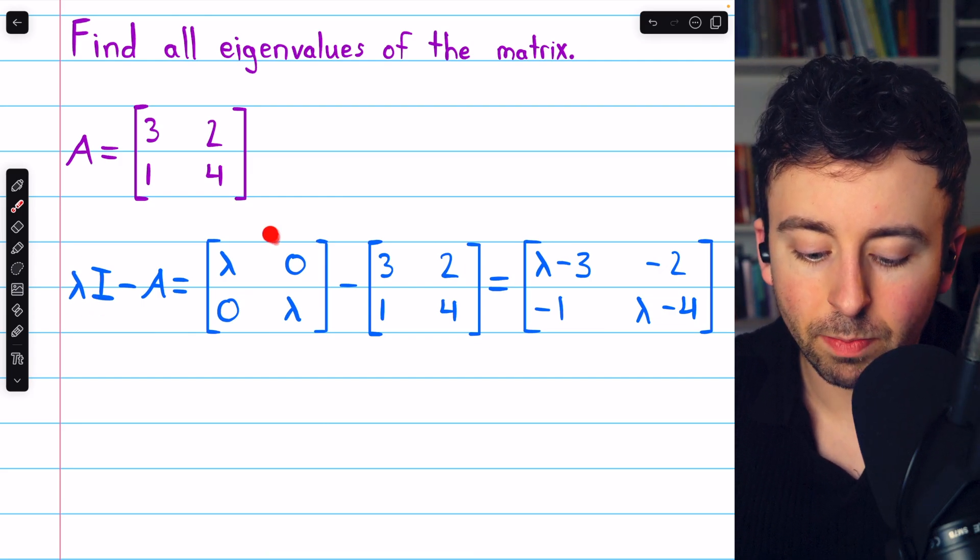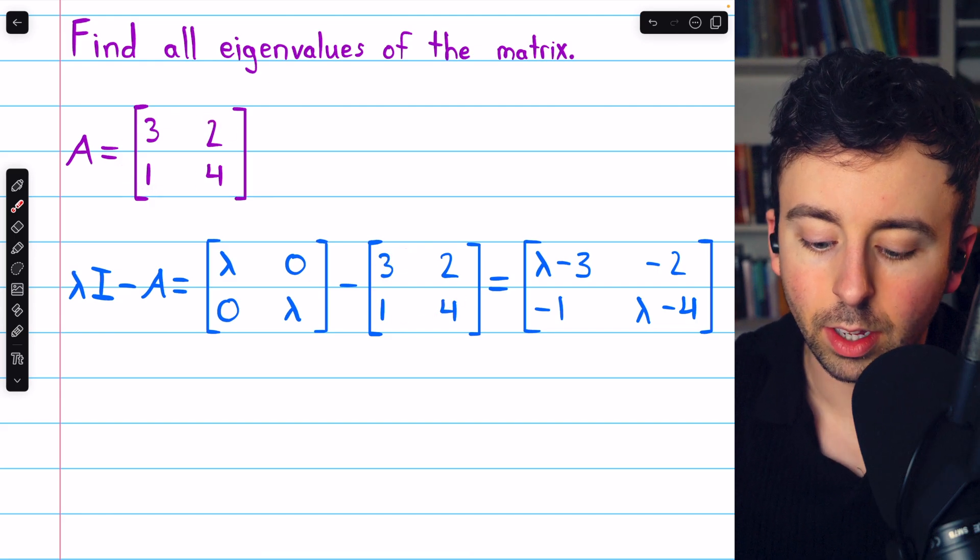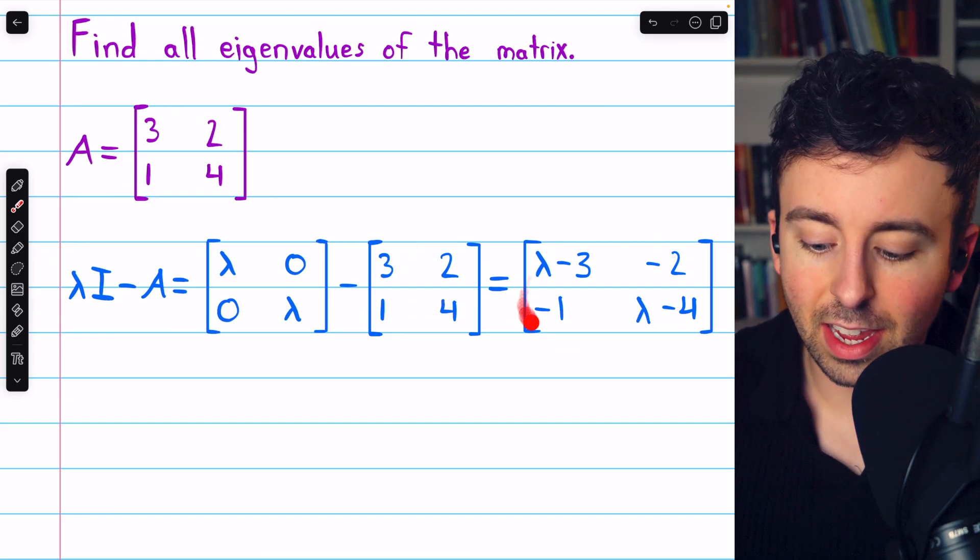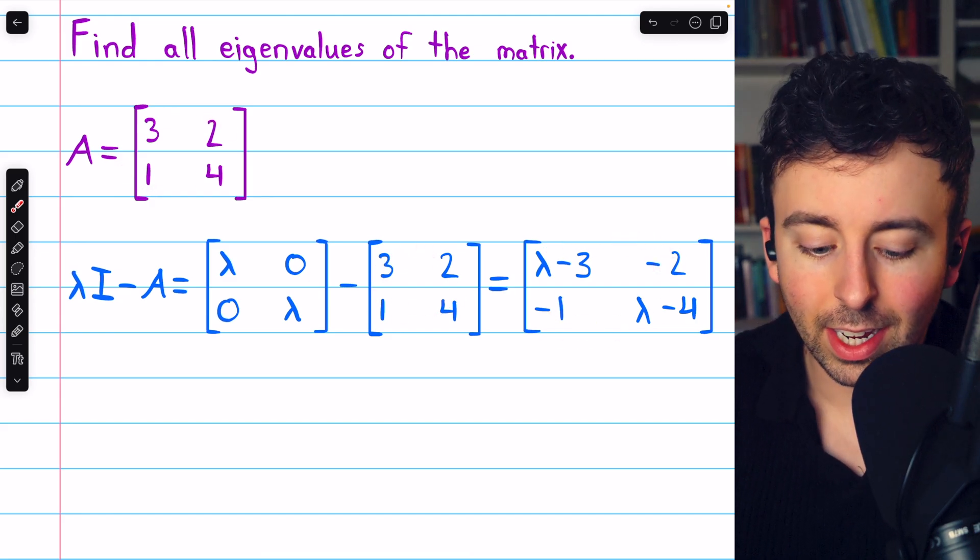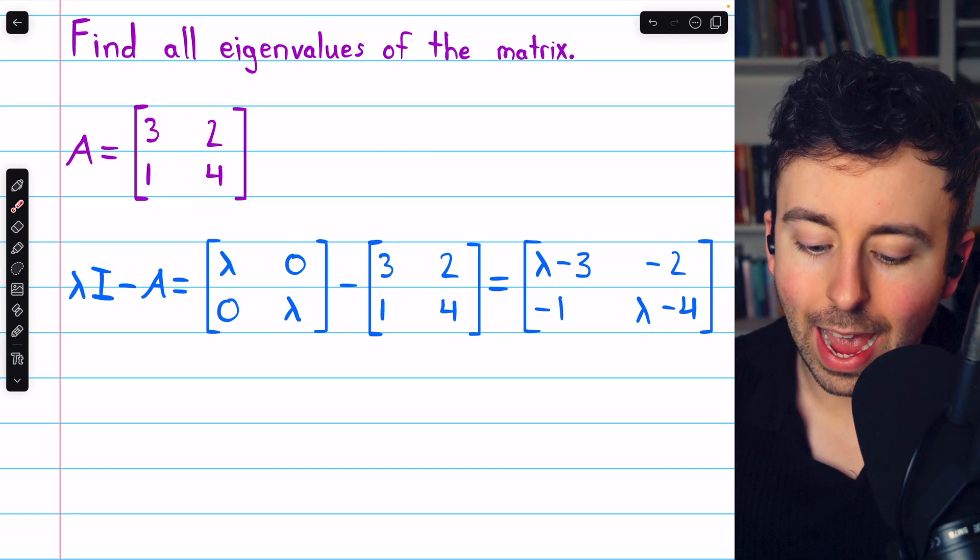Lambda times the identity is this matrix here, and we are subtracting our given matrix A. That gets us here. The way this works is that the entries of A are just negated, and a lambda is added along the main diagonal. So this is the matrix.